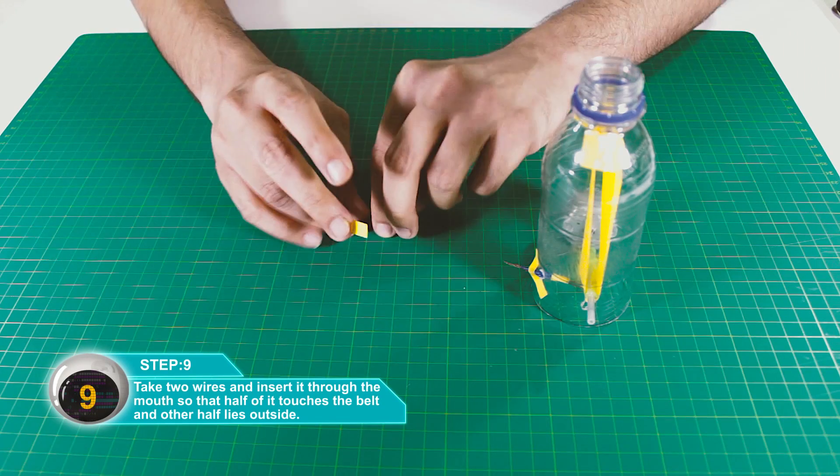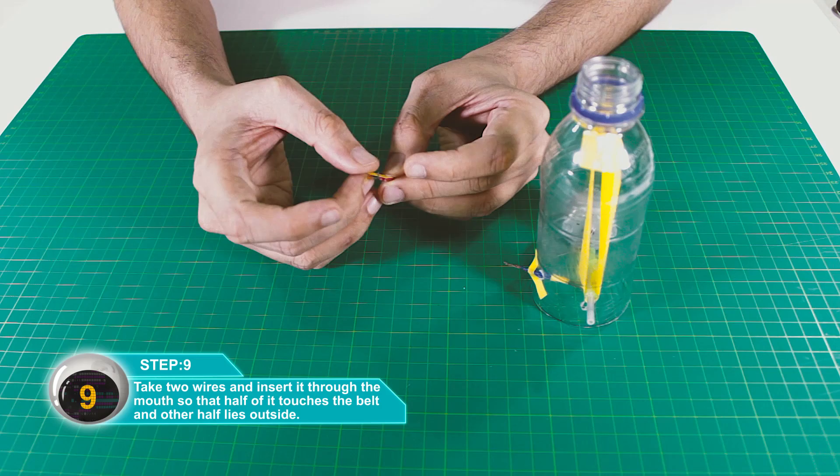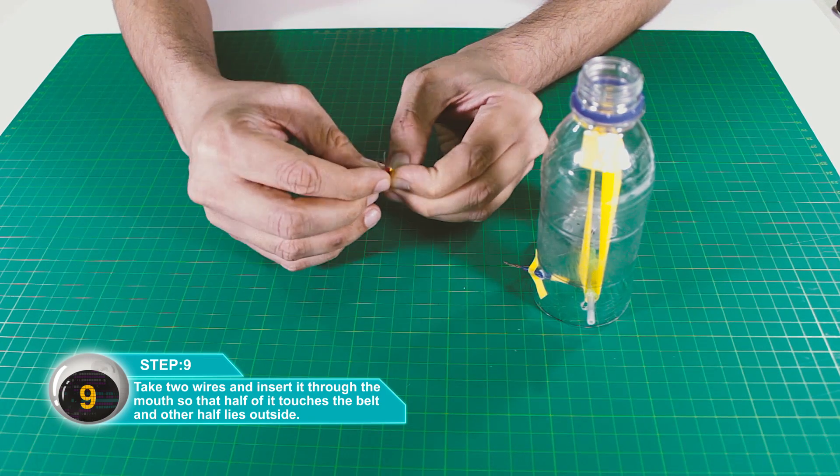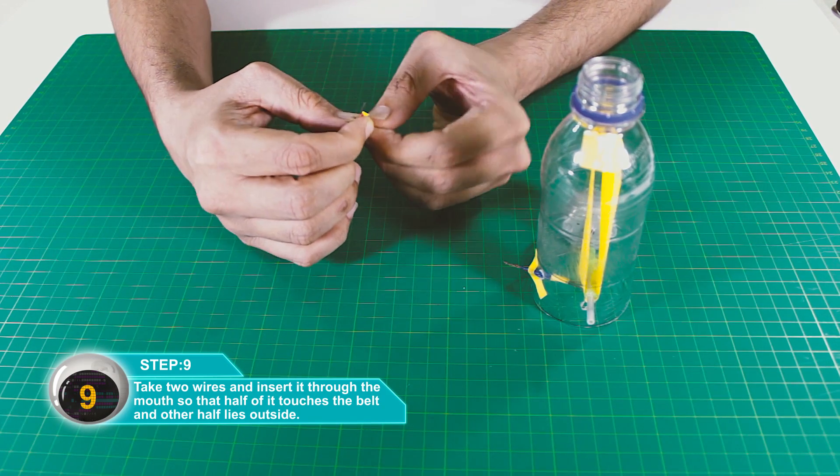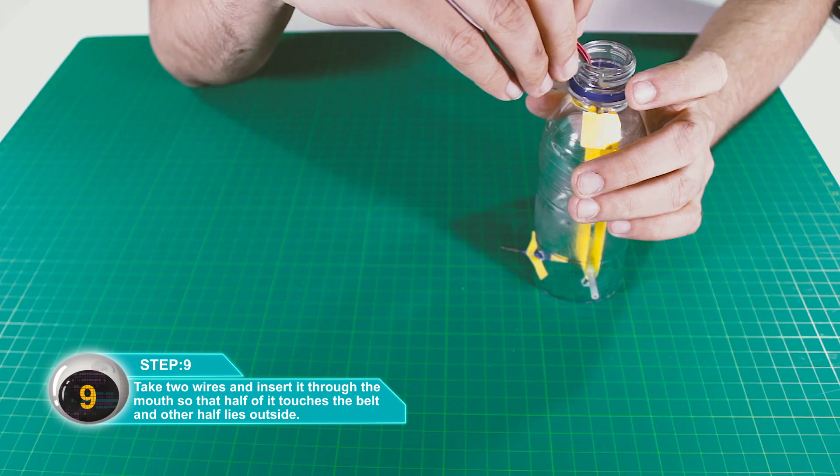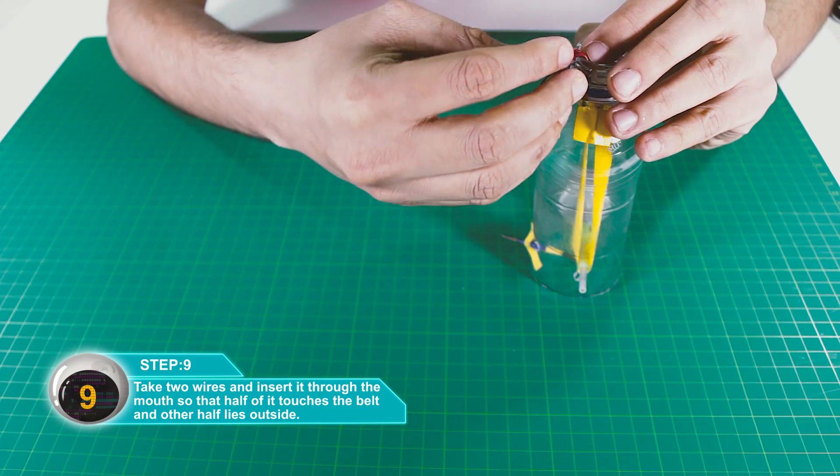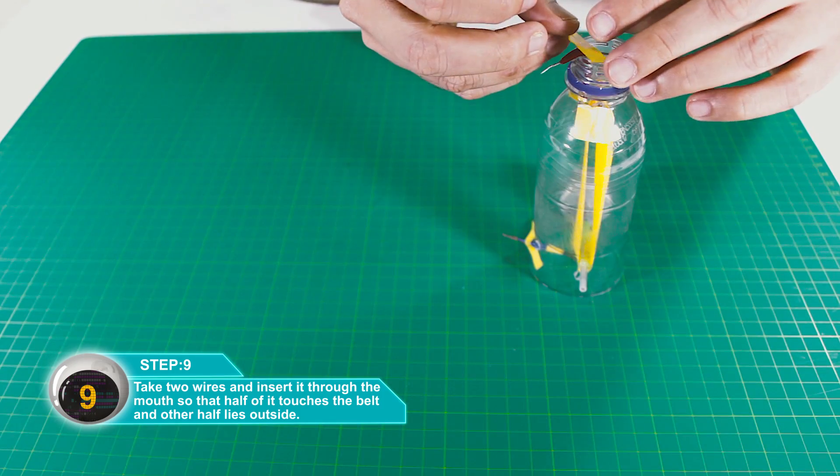Take two more wires and insert them through the bottle's mouth so that half touches the belt and half stays outside.